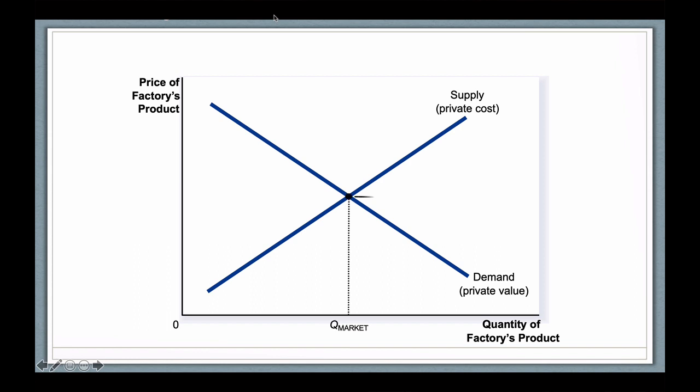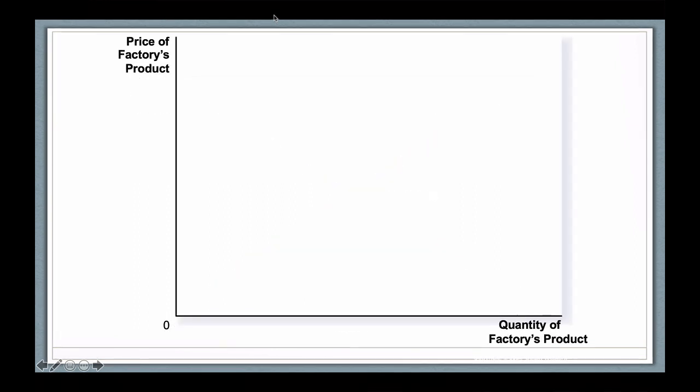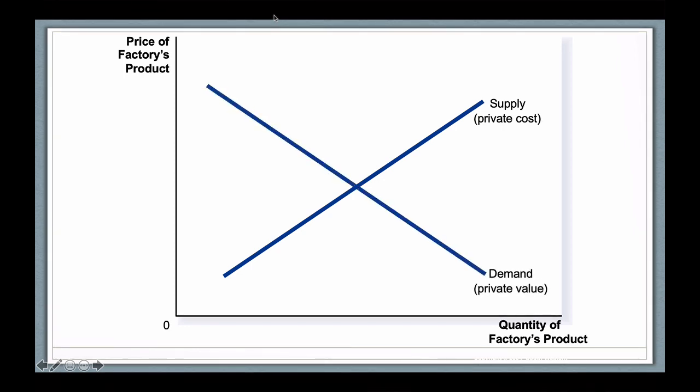But remember, the factory is producing a negative social cost when it produces this good. So how would an externality look using that same graphical representation? Here's the factory supply curve. It looks exactly the same. And here's the consumer demand curve, which looks exactly the same. And of course, there's the same market equilibrium.